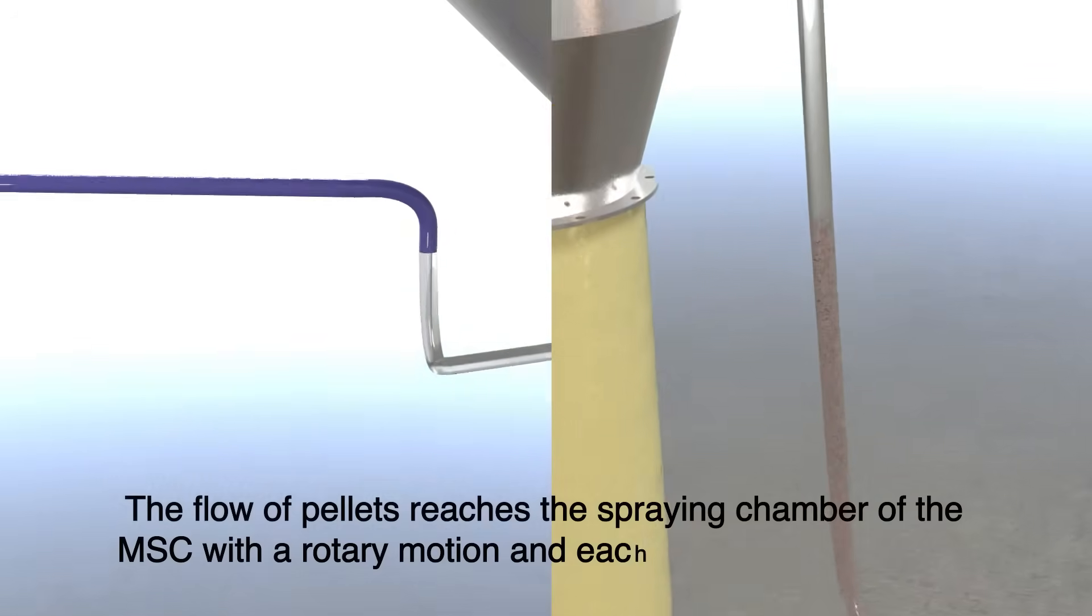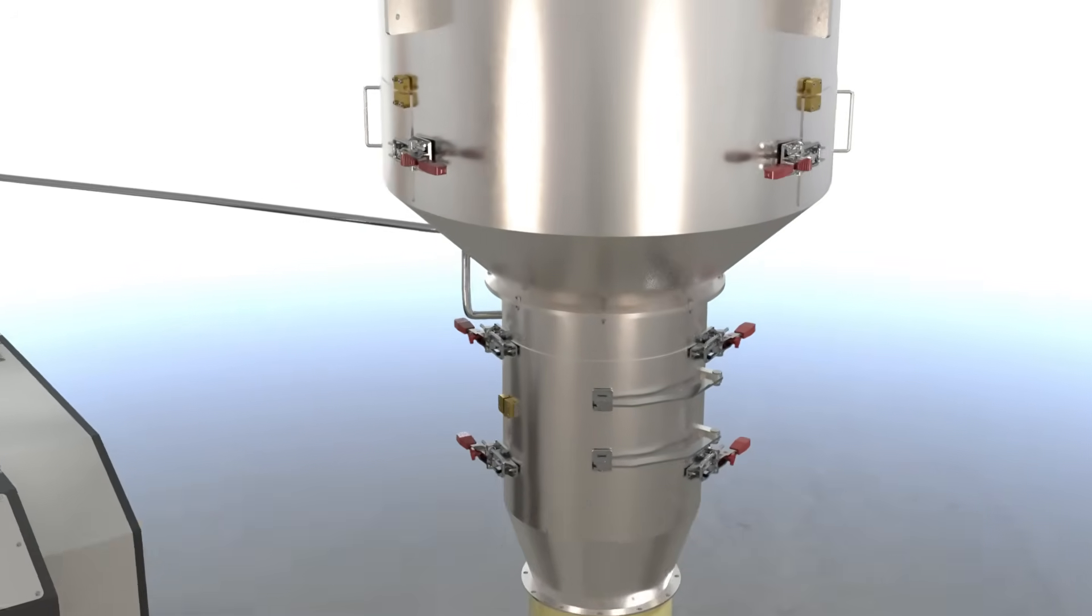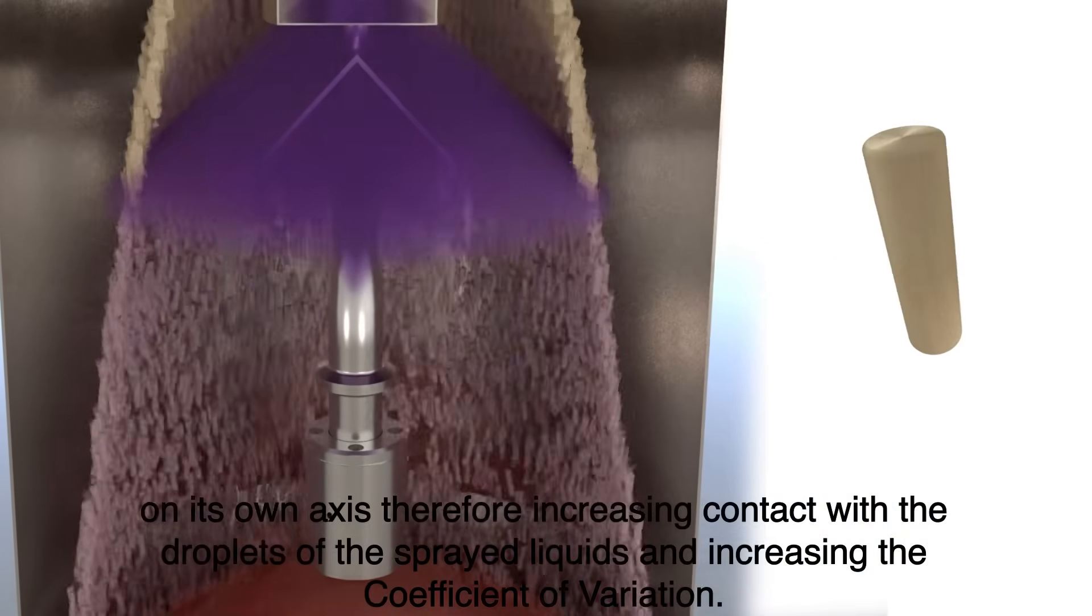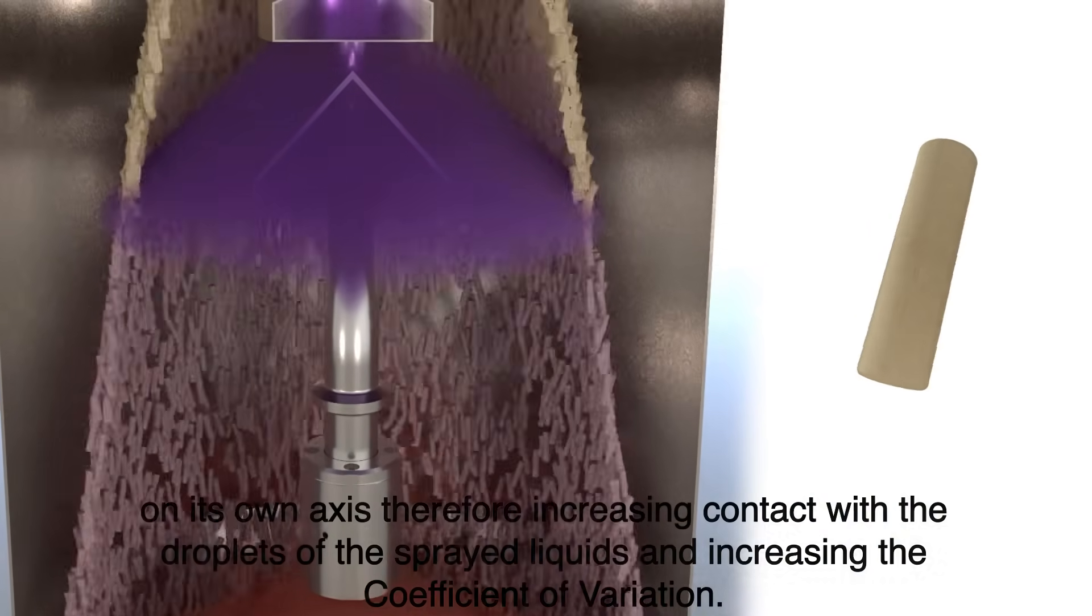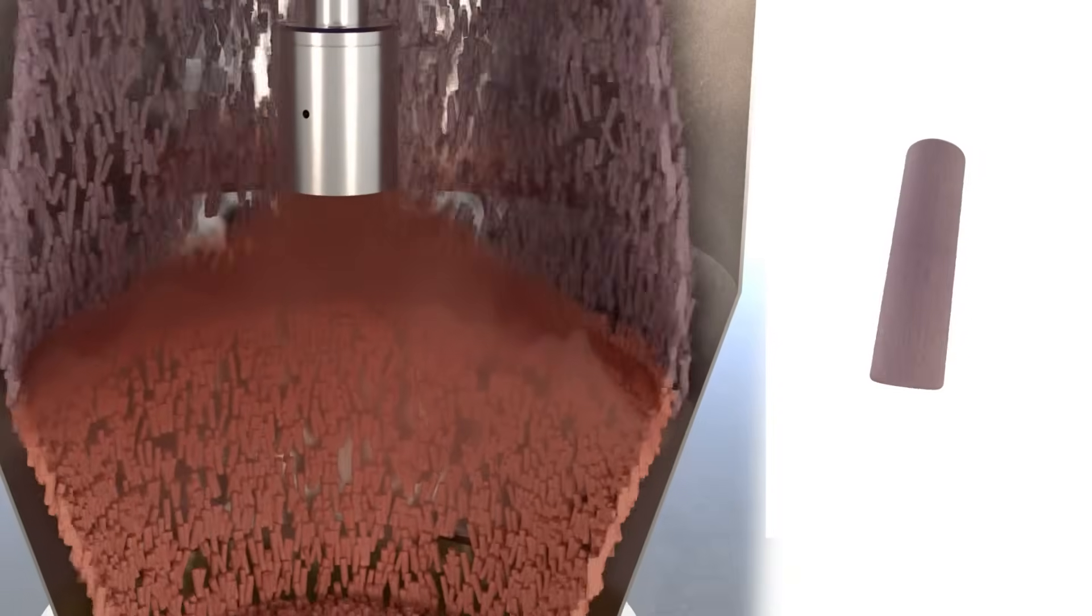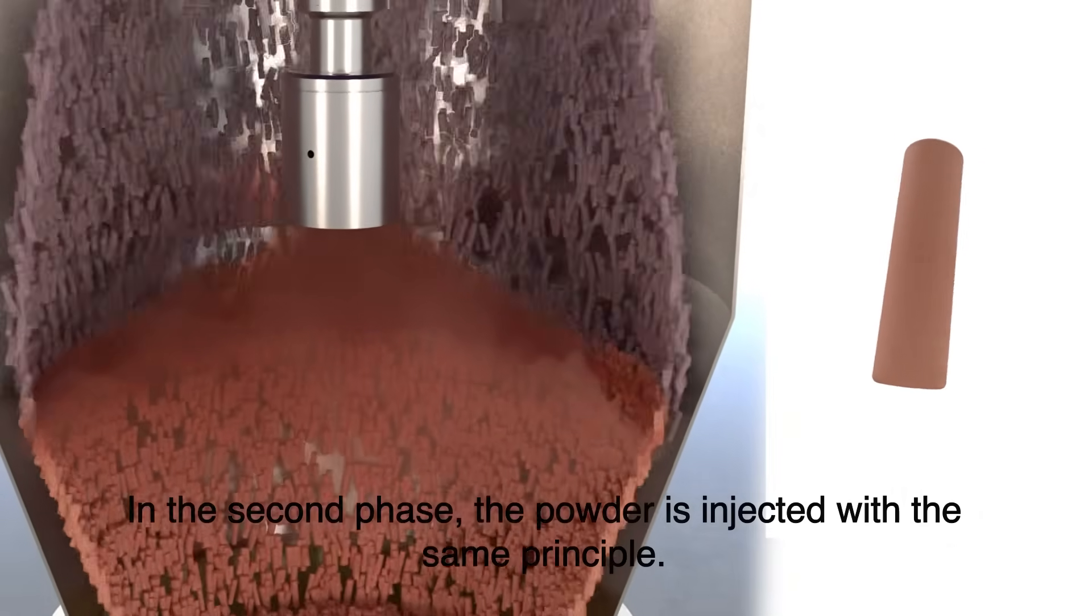The flow of pellets reaches the spraying chamber of the MSC with a rotary motion, and each pellet is also rotating on its own axis, therefore increasing contact with the droplets of the sprayed liquids and increasing the coefficient of variation. In the second phase, the powder is injected with the same principle.